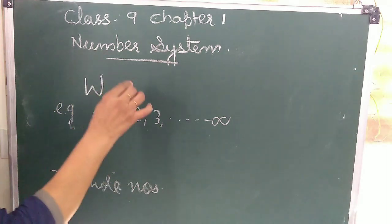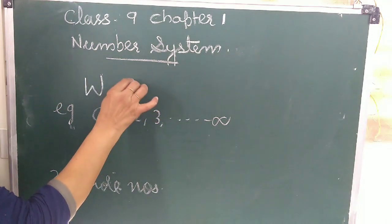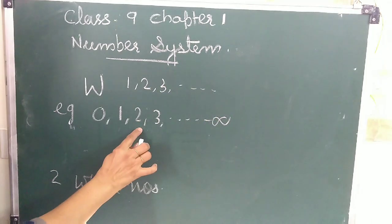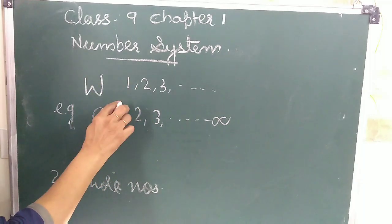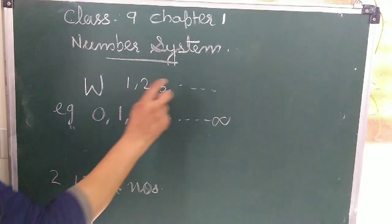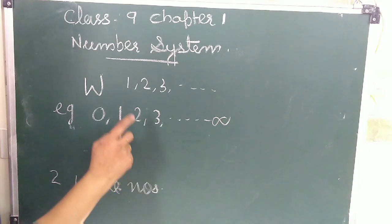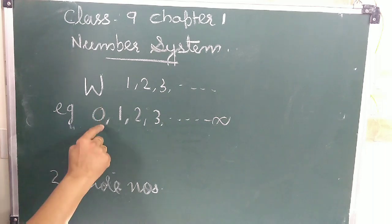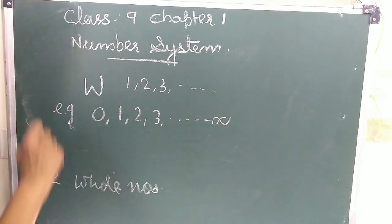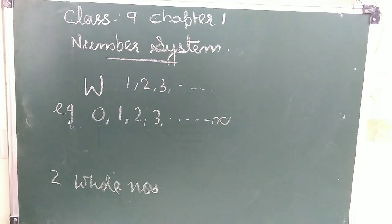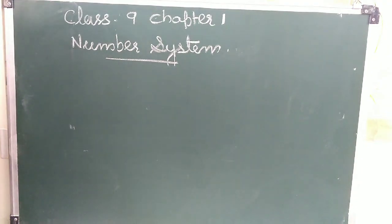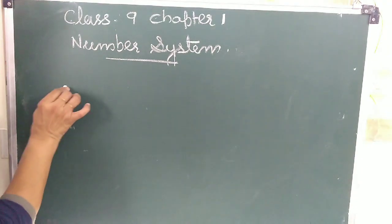From these two sets — natural numbers and whole numbers — we can say all natural numbers are whole numbers, but all whole numbers are not natural numbers, because zero is a whole number but not a natural number. Now let's consider natural numbers and whole numbers on a number line.